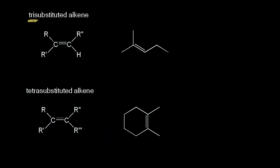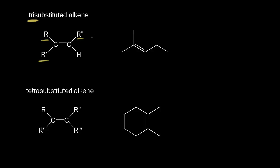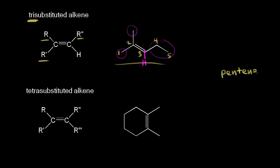Now let's look at a trisubstituted alkene — three R groups: R, R prime, and R double prime, which may be the same or different. Drawing in the hydrogen on one carbon makes it easier to see that we have three R groups bonded to the double bond. To name it, find the longest carbon chain including the double bond: carbon one, two, three, four, and five — a five-carbon alkene is pentene. The double bond starts at carbon two, giving us 2-pentene, and there's a methyl group off carbon two, so the full name is 2-methyl-2-pentene.